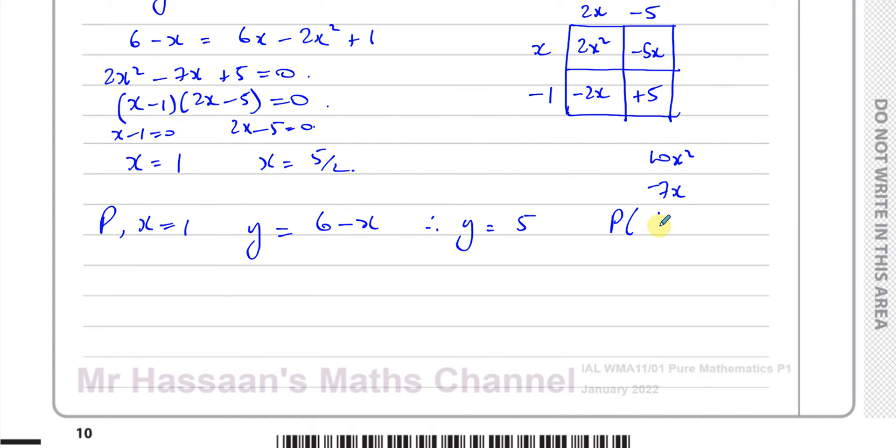And for Q, we have x = 5/2, so y = 6 - x, which means y = 6 - 5/2 = 3.5. We can say it's 3.5 or 7/2. Yeah, 6 - 2.5 is 3.5. So the coordinates of Q are (5/2, 7/2), or we can say (2.5, 3.5) if you want.